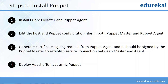After that, we will edit the host and Puppet configuration file in both Puppet Master and Puppet Agent. Our third step is to generate a certificate signing request from Puppet Agent, and that certificate should be signed by the Puppet Master to establish a secure connection between both. In the end, we will look at a classic Puppet example in which I will deploy Apache Tomcat version 9 using Puppet. So let us proceed with the first step: install Puppet Master and Puppet Agent.